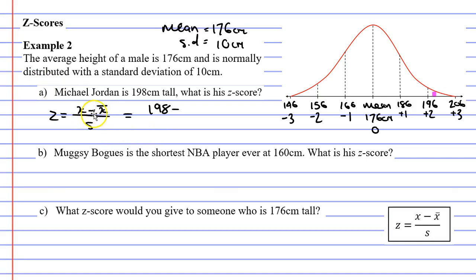And now we're going to subtract our mean, which is 176 centimeters. All over s, our standard deviation of 10. Now, 198 minus 176 gives us 22, so we get 22 over 10. And 22 divided by 10 gives us a Z score of 2.2.